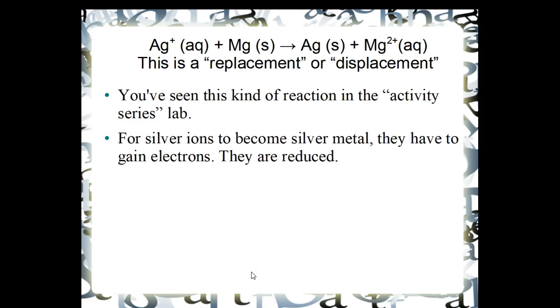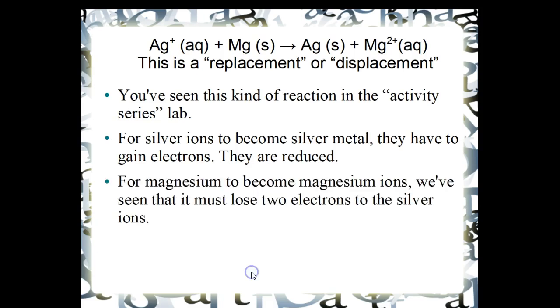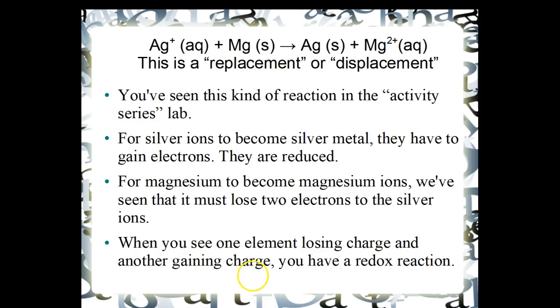For silver ions to become silver metal, they have to gain electrons. That's a reduction. And for magnesium to become magnesium ions, we've seen earlier it has to lose two electrons to the silver ions. Therefore, when you see one element losing charge and another gaining charge or eliminating its charge, you must have an oxidation-reduction reaction.